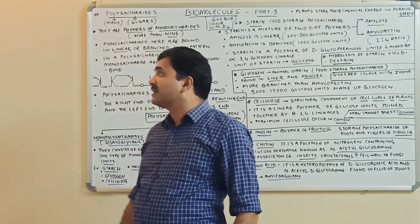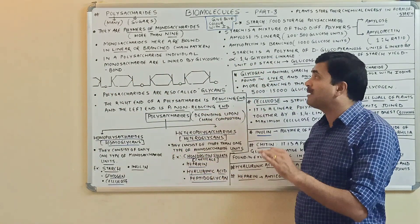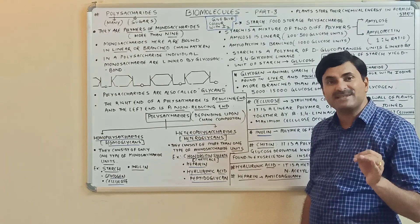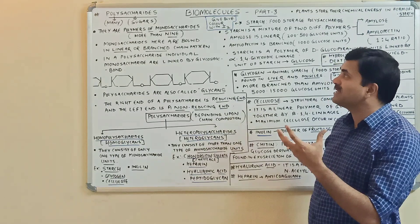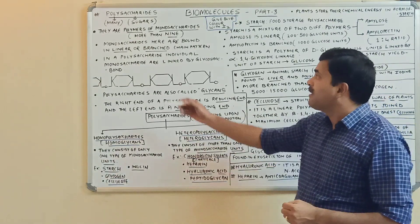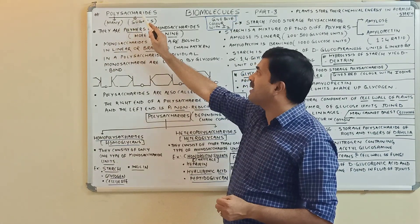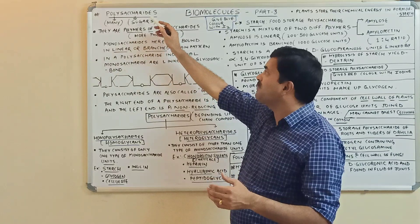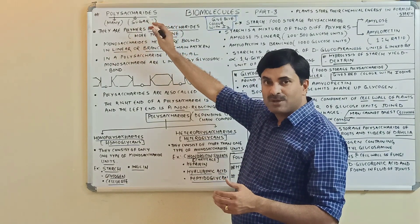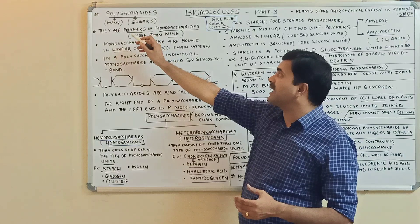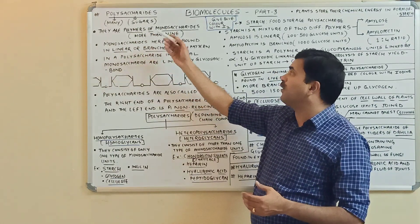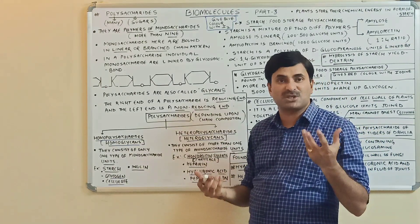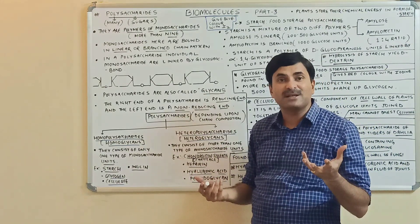Hello to all viewers. Today we are going to discuss about the polysaccharides. In the previous video we have discussed about the monosaccharides as well as the oligosaccharides, and today we will be discussing about the polysaccharides. Poly means many and saccharide means sugar — so polysaccharides are polymers of monosaccharide units.